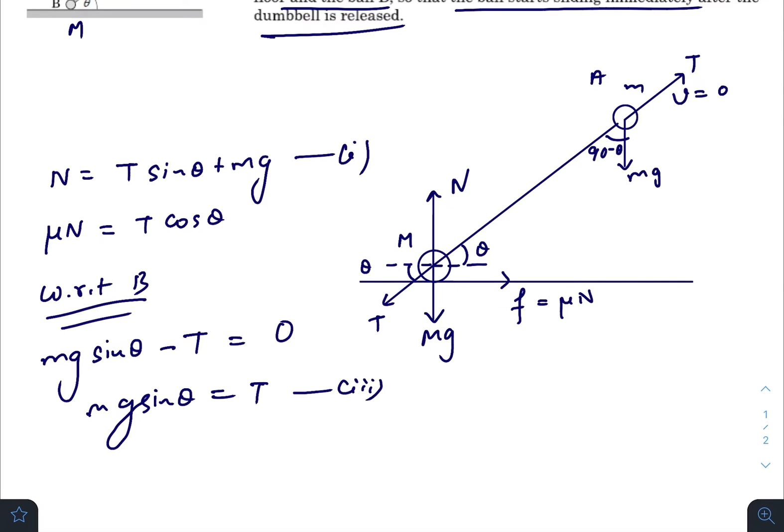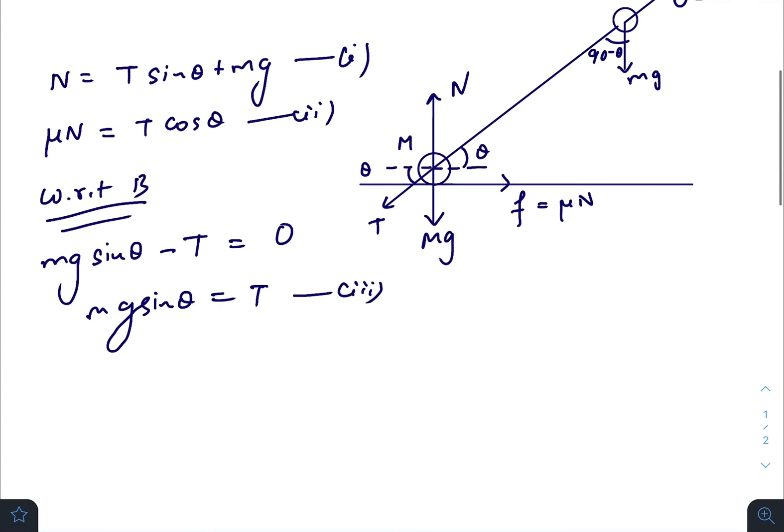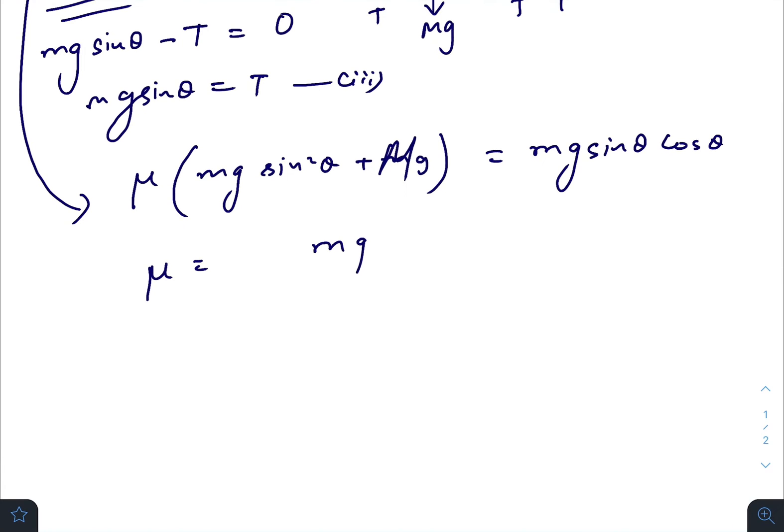This is our third equation. We need to find μ. As you can see, μN, and N is T sin θ plus Mg. Using the value of T here, it will be mg sin² θ plus Mg, equals mg sin θ cos θ. So μ becomes mg sin θ cos θ divided by g(m sin² θ + M). This g gets cancelled out.